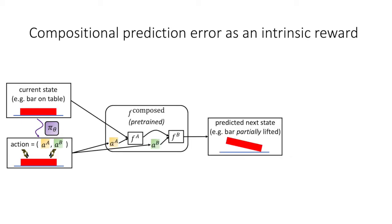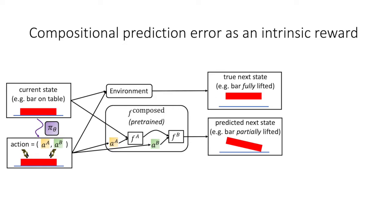A composition of pre-trained single-agent forward models predicts the resulting state to be one where the bar is only partially lifted, since neither forward model has ever encountered states where the bar is lifted during its training. When this action is executed in the world, the bar is actually fully lifted, very different from the compositional prediction.